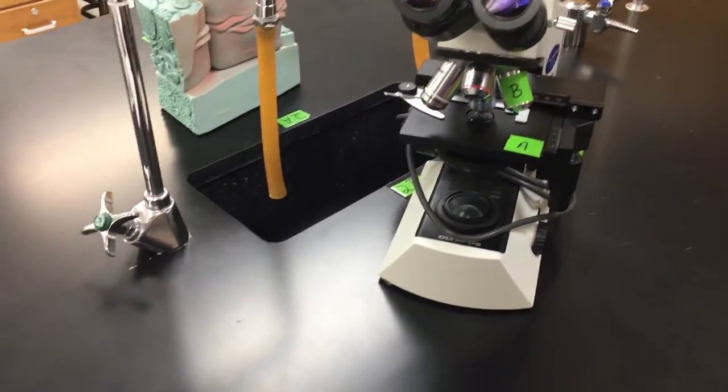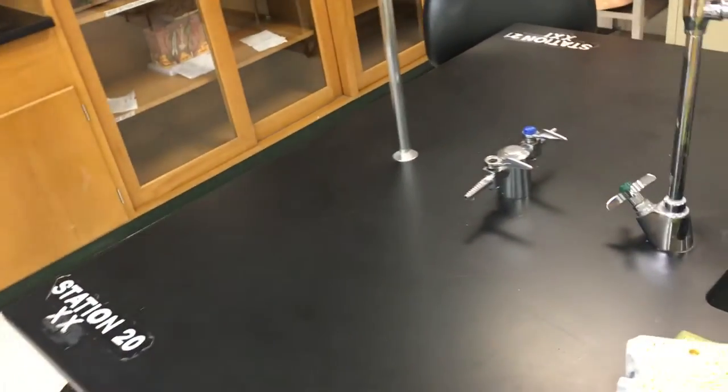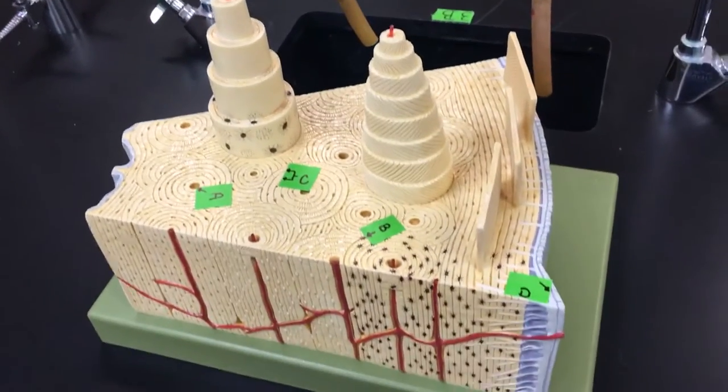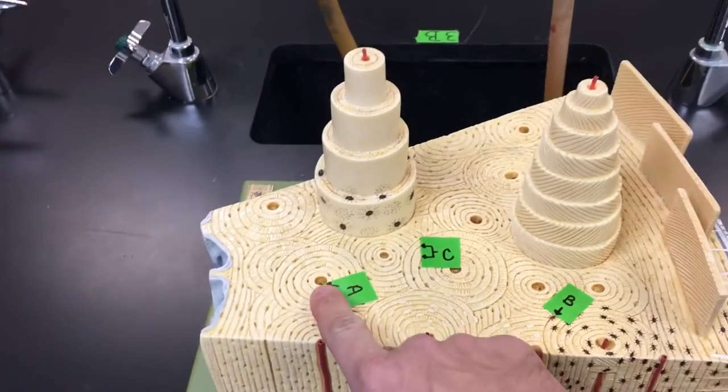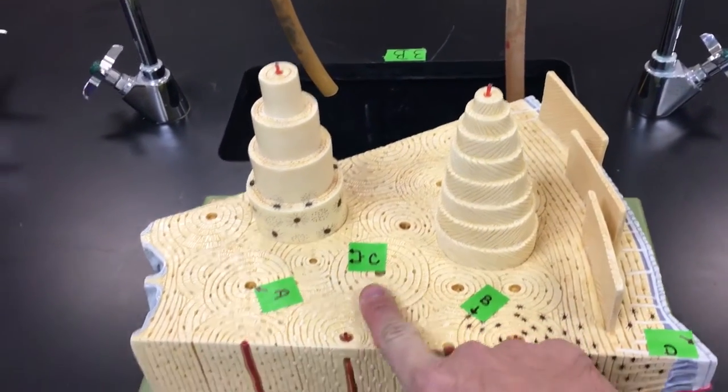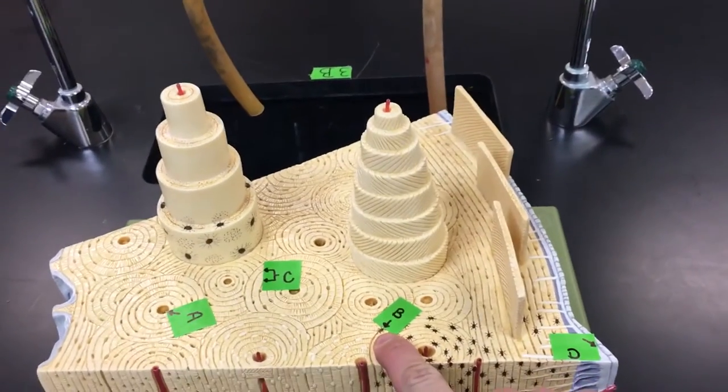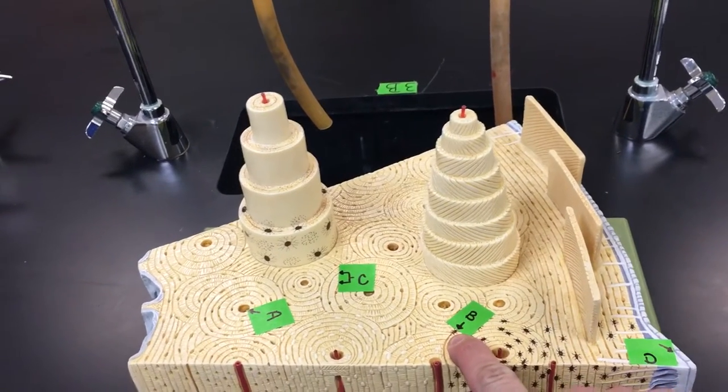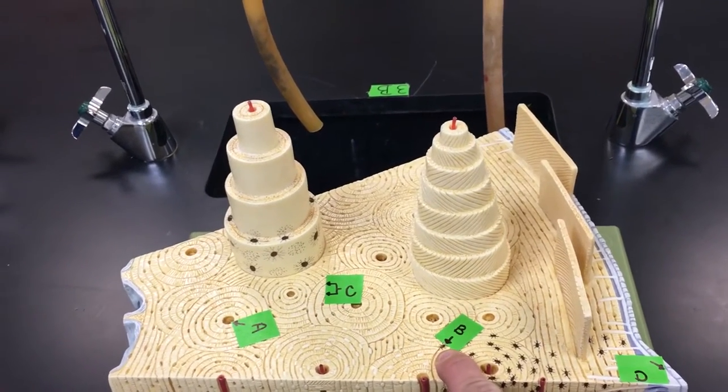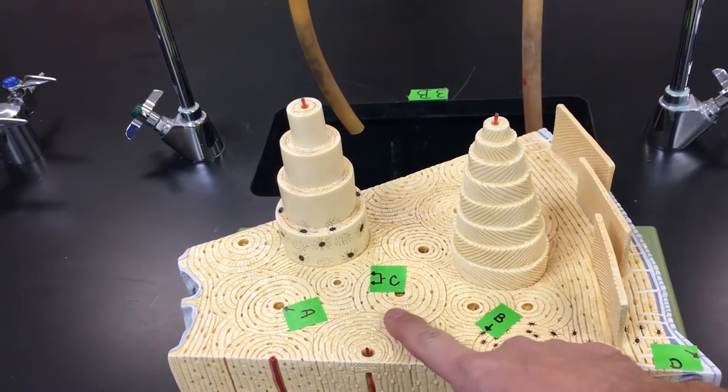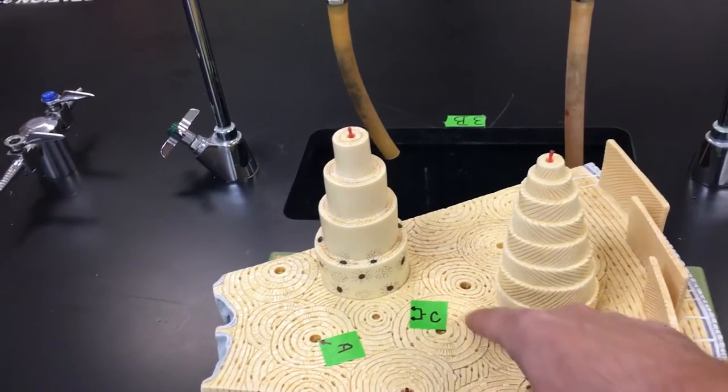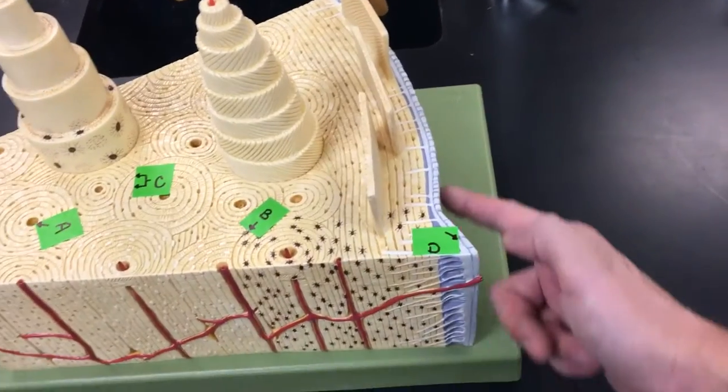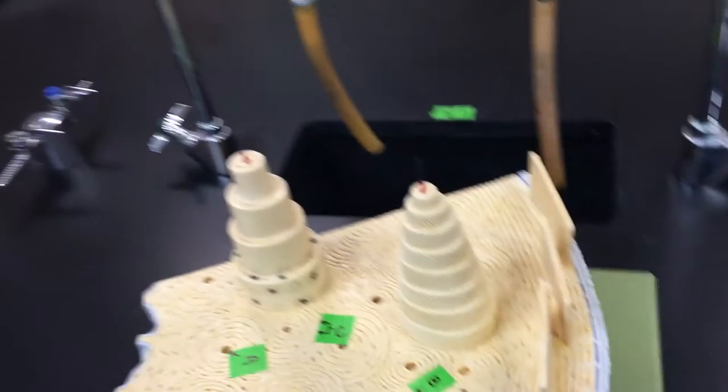Moving right along to section 5, osseous tissue model labeling. A is going to be the central canal. B could be a couple of things. I was looking for lacunae, but if you answered the canaliculi, I'd let you get that answer correct as well. C is going to be the concentric lamellae. If you answered lamellae, you got the points as well. And then D is the periosteum.